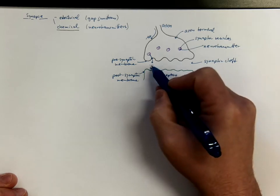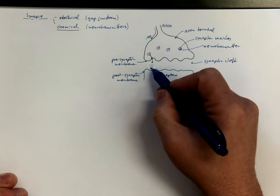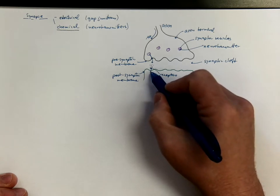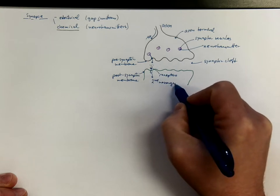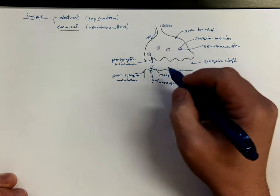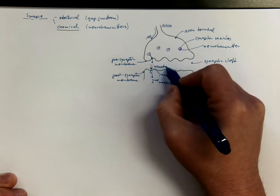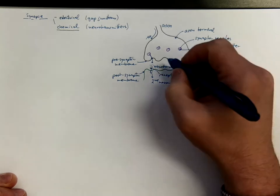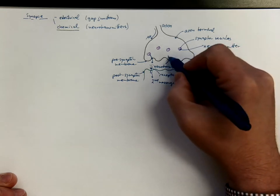Upon binding of the neurotransmitter to the receptor, other cascades can be triggered, such as activation of second messengers, coupling with ion channels, etc., which will be discussed in physiology classes. The neurotransmitter may then be deactivated and/or taken back by a process called reuptake.